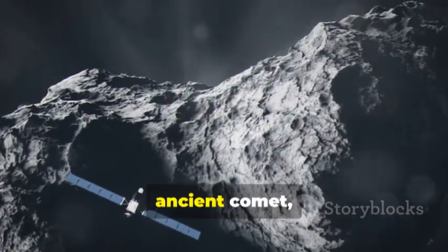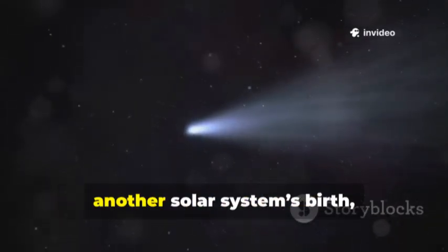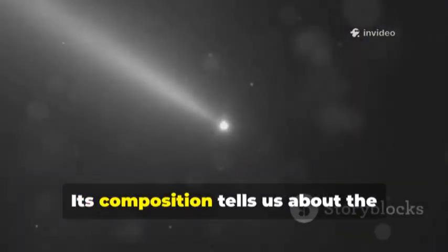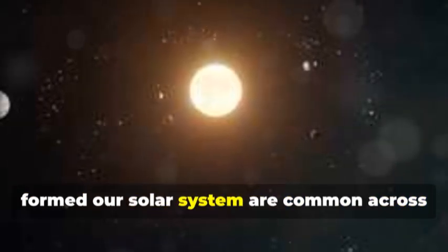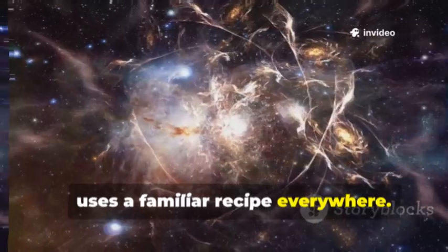A sluggish, ancient comet, not an alien artifact. 3i-ATLAS is a pristine sample from another solar system's birth, a direct test of our theories. Its composition tells us about the chemistry of its home nebula. The evidence suggests the processes that formed our solar system are common across the galaxy. The universe, it seems, uses a familiar recipe everywhere.